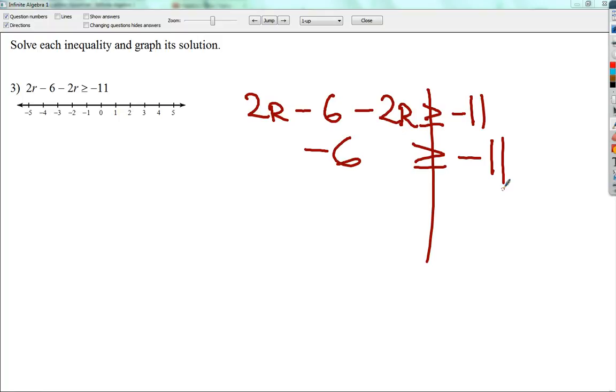And it says that negative 6 is greater than or equal to negative 11. It doesn't have to be both of those. It just has to be one of them. And it is greater. Negative 6 is greater. So I'm going to say my answer is all real numbers. Because I can plug in anything I want for the value of r. And it will always make a true statement. So my graph is everything all filled out in all its glory.